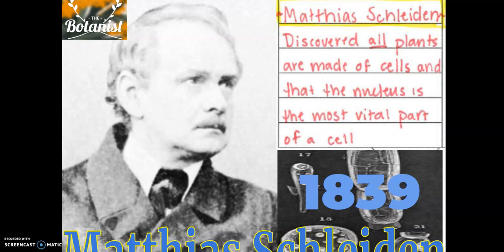So we have here Schleiden. Schleiden is a botanist, which means that he studies plants. His big contribution is that by studying plants with microscopes, he discovered that all plants are made of cells — in every plant tissue that he observed, he observed cells.